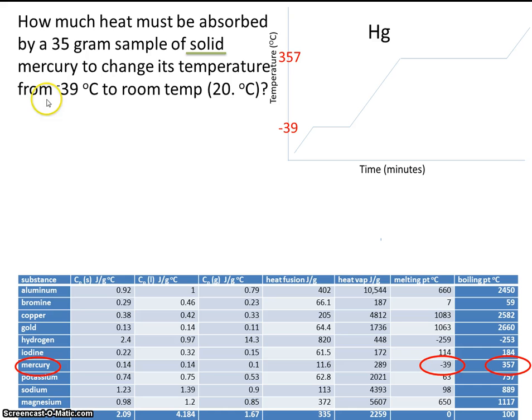So it looks like we're starting off at -39. So that's here on this plateau. So we're somewhere along here. But because it's a solid piece of mercury, that means we're going to be starting right here. So first thing we're going to do is we're going to take that solid mercury and add heat energy until it melts.